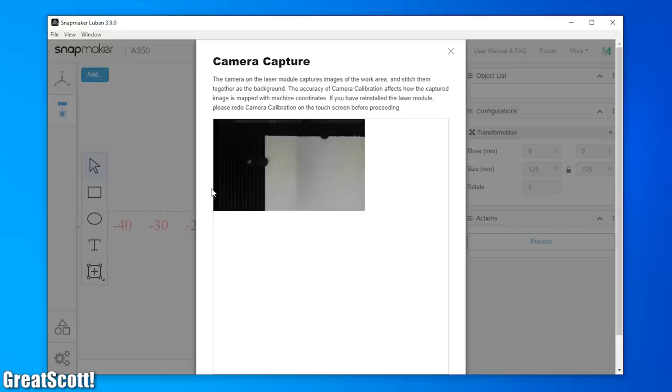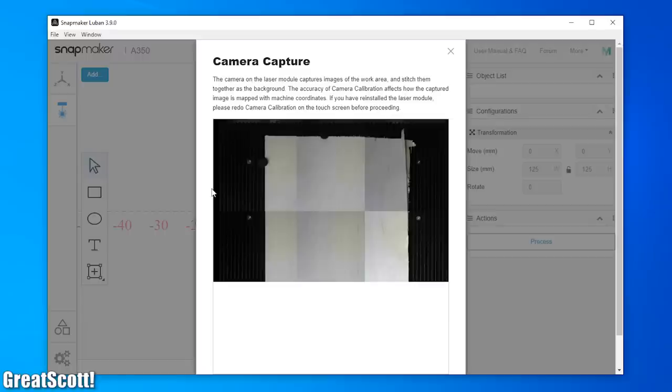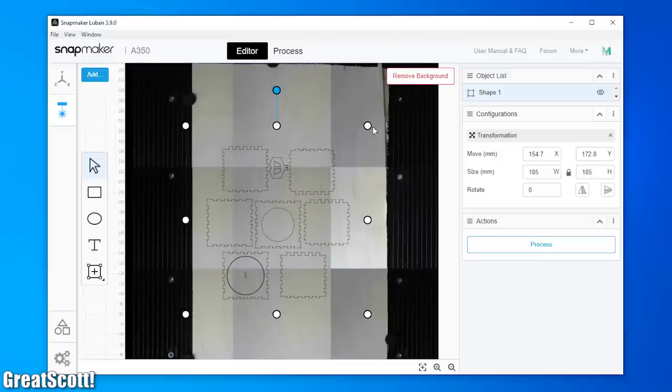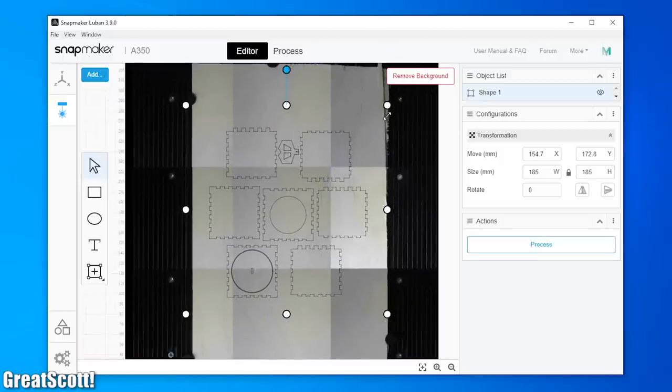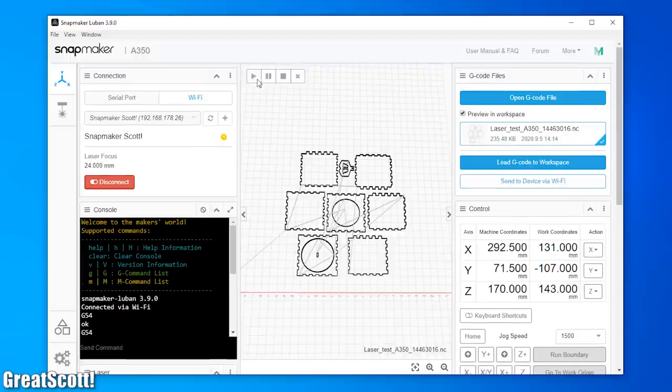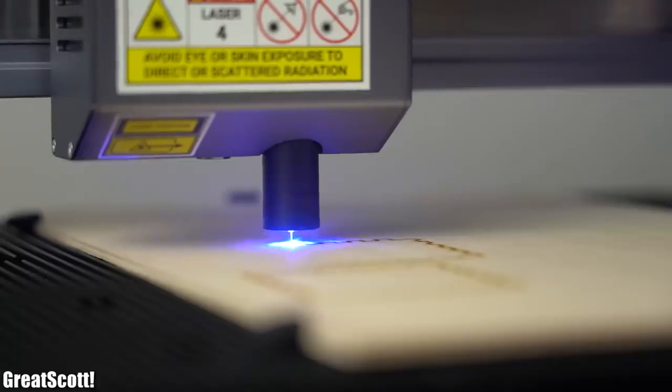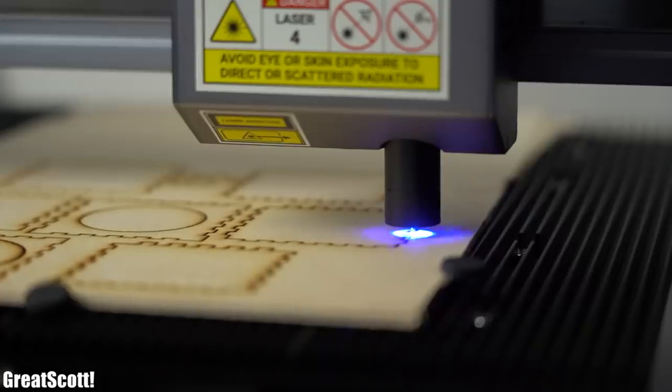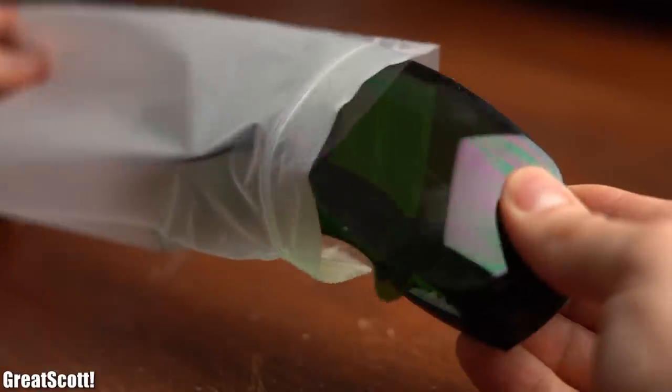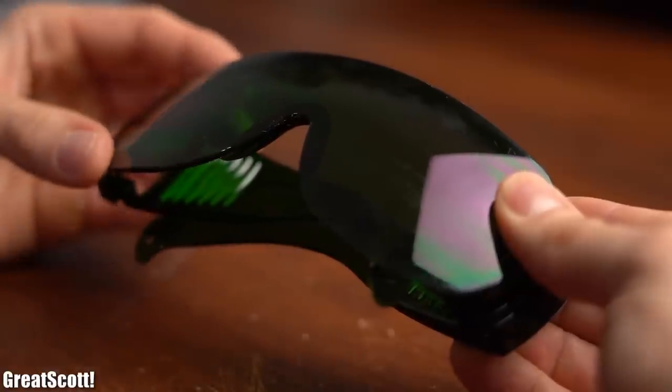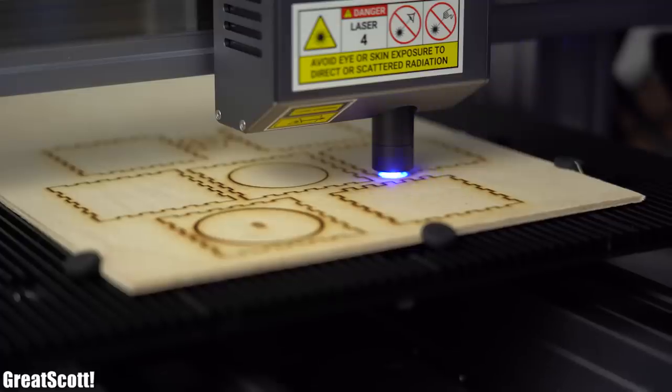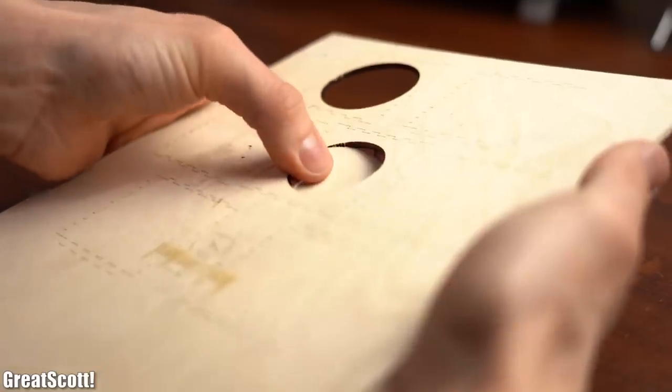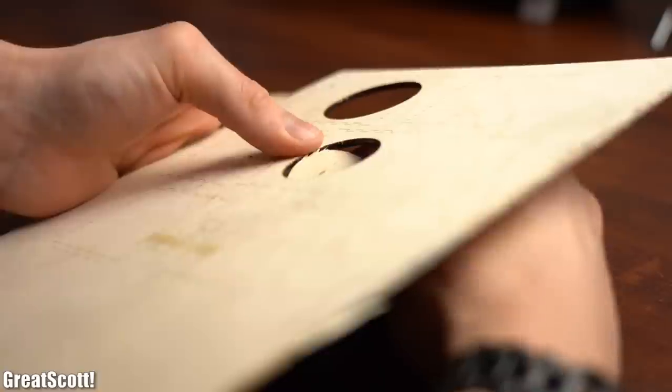Then the software took pictures of the material which I think is an awesome feature when it comes to determining where you want to cut the material. Afterwards all I had to do was click start and the laser started cutting the example project which was pretty awesome to look at but don't forget to wear laser safety goggles.